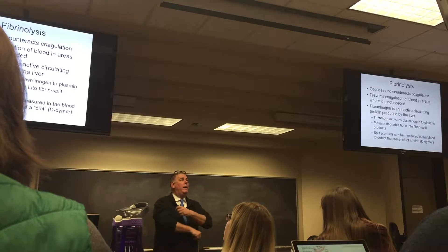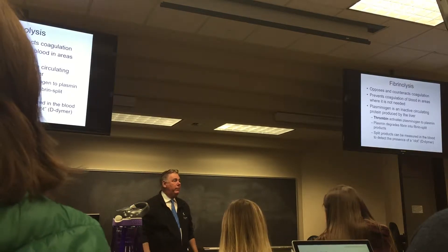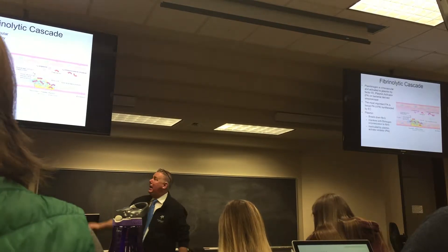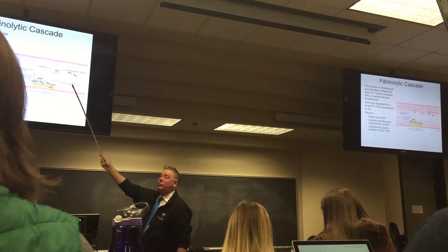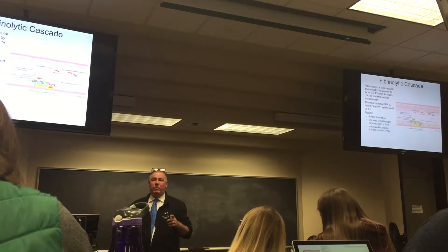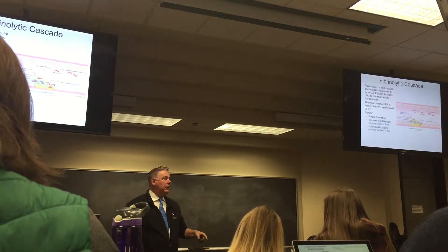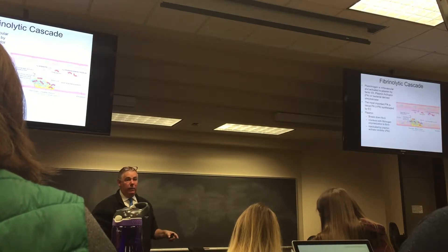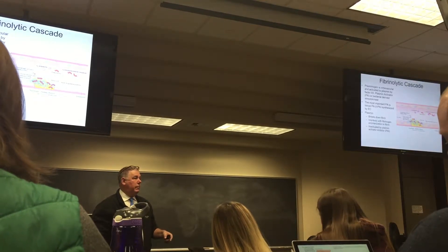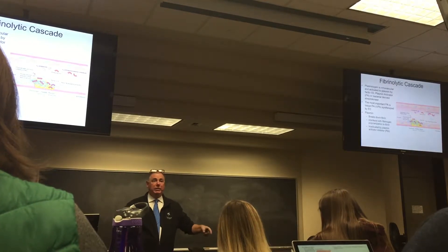This is the fibrinolysis and D-dimer explanation: the cascade produces fibrin split products, and that's what you're measuring with a D-dimer. If you have a suspected clot and get a negative D-dimer, that does not rule out a thrombus — you still need further testing. A positive D-dimer just helps you confirm it.